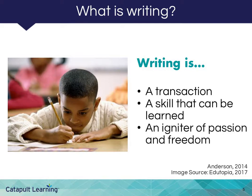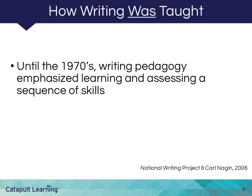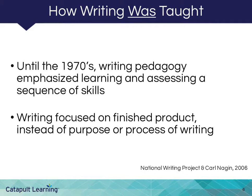Until the 1970s, most writing pedagogy emphasized learning and assessing a sequence of essential skills: forming letters, building vocabulary, identifying parts of speech, diagramming sentences, mastering grammar and punctuation, and following paragraph types and genres of writing according to prescribed conventions. This approach focused on the finished product with little attention to the purpose or process of producing it. The emphasis on correctness overshadowed the deep rhetorical, social, and cognitive possibilities of writing for communication and critical thinking. In many classrooms today, variations on the product-centered approach are still in use.